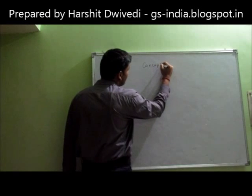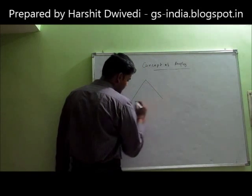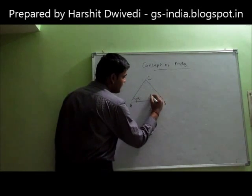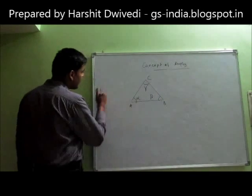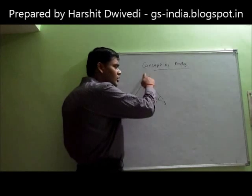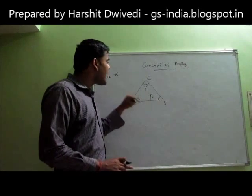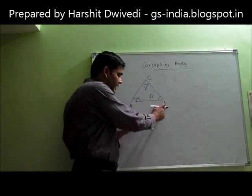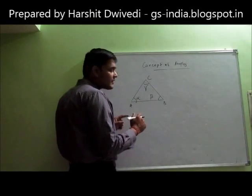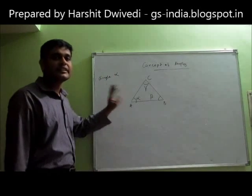So, concept of angles. Suppose this is a triangle with a line ABC. This is angle alpha, this is angle beta, this is angle gamma. What does angle alpha imply? Angle alpha implies the orientation of line AC keeping AB as the baseline. You can say that alpha is the orientation of line AC when AB is considered as a baseline, or in other words, alpha is the orientation of line AB when we keep line AC as the base. This is the technical definition of an angle.